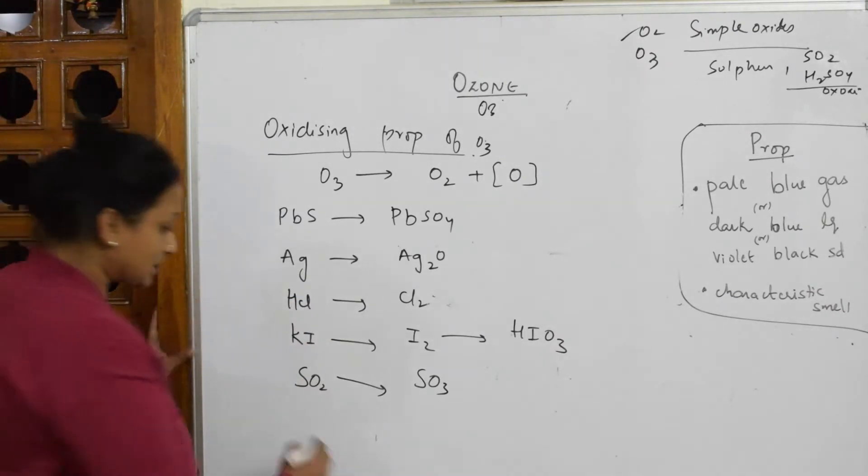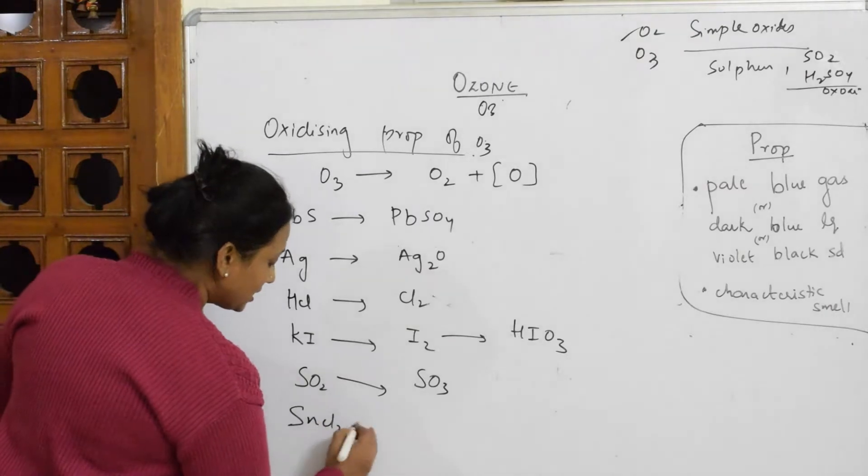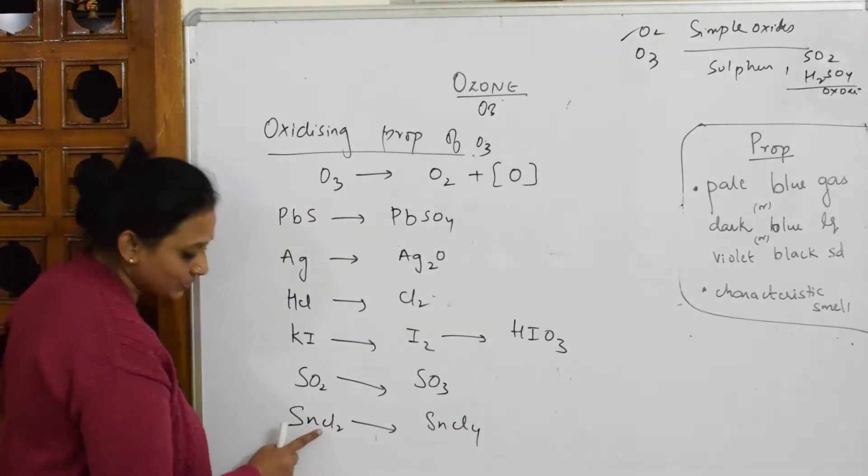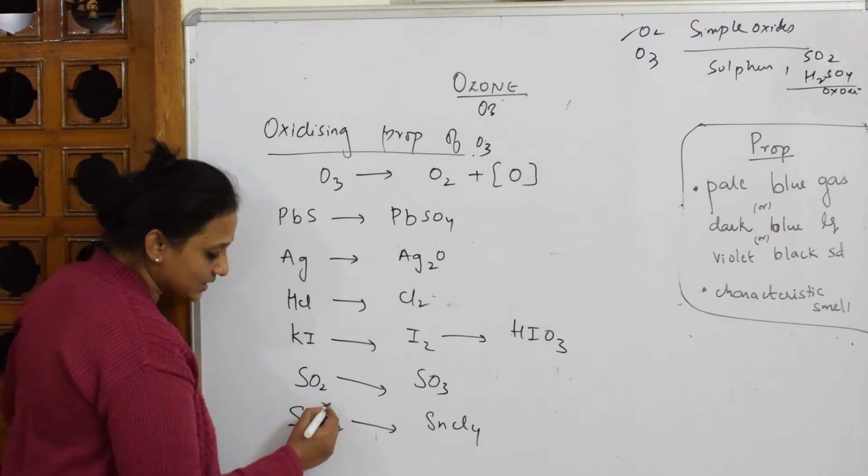And further if I have to take SnCl2 it's going to get converted to SnCl4. Now let us see one example. Your chlorine valency is minus 1 into 2, so minus 2. This is plus 2.